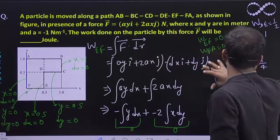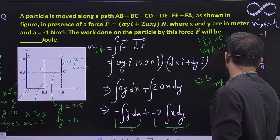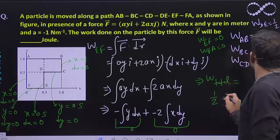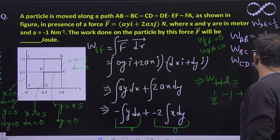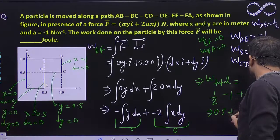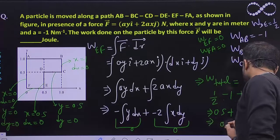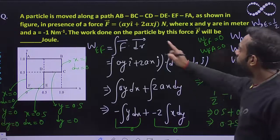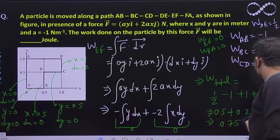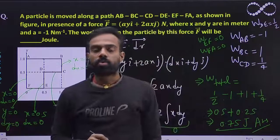Now the total work done is the sum of all segments: minus 1 plus 1 plus 1/2 plus minus 1/4 plus 0 plus 0. That gives 0.5 minus 0.25 = 0.25, approximately 0.5 Joule. Everything is in SI units — meters and Newtons — so the answer is in Joules. I hope you understood this question, thank you!